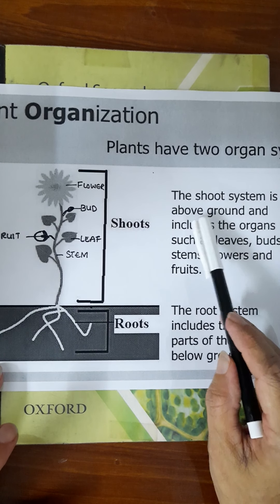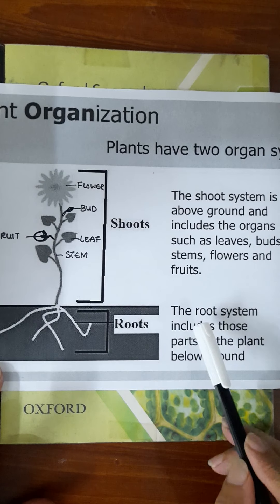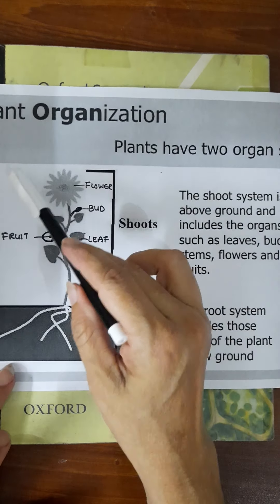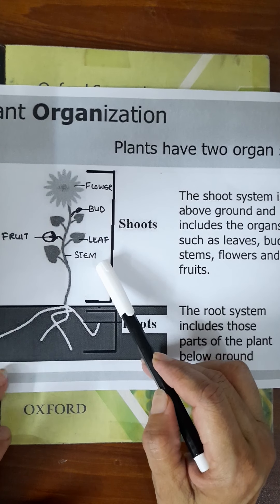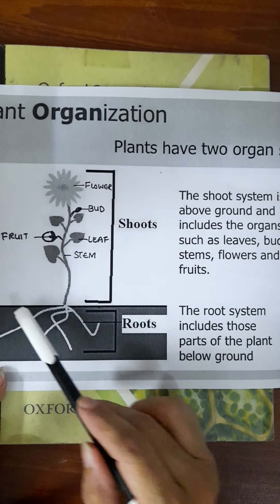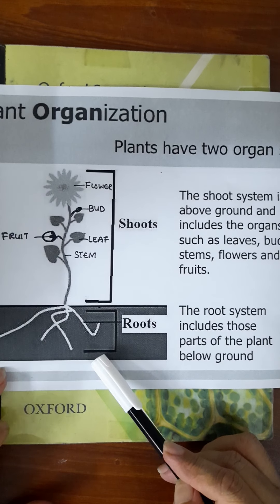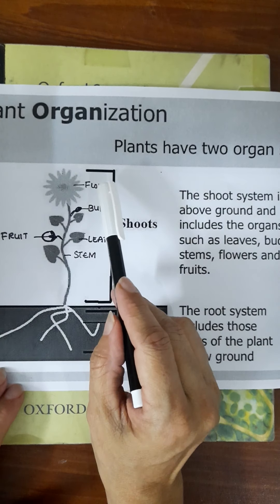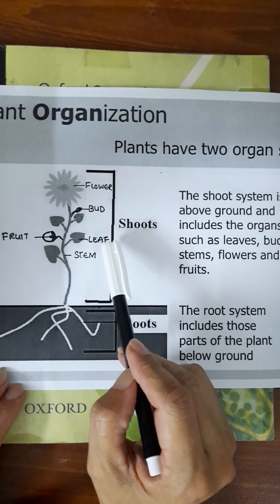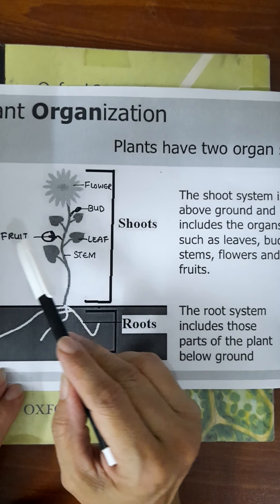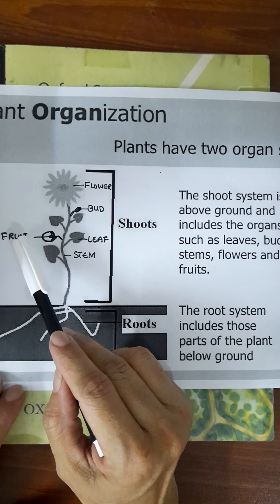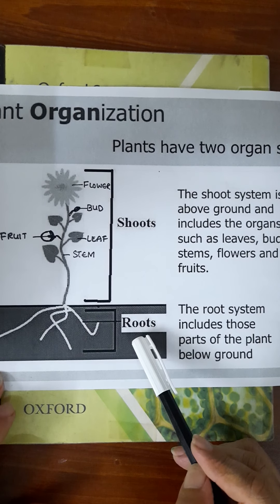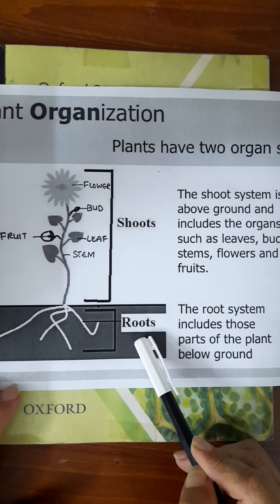The shoot system is above the ground and the root system is below the ground. This part of the plant is the shoot system and this part of the plant is the root system. The shoot system consists of organs like the flower, buds, leaves, stem and fruits. While the root system consists specifically of the roots and some other parts also.